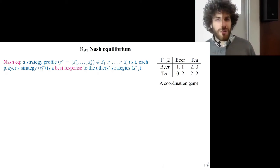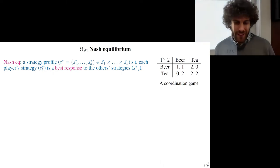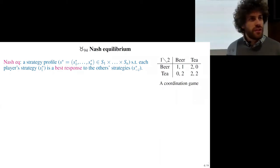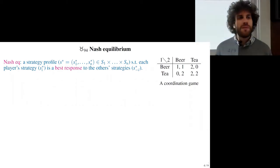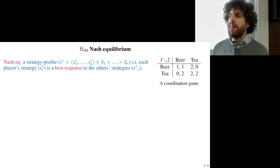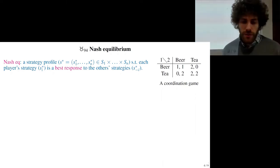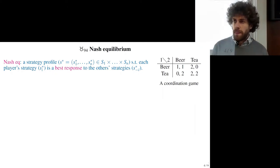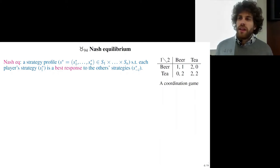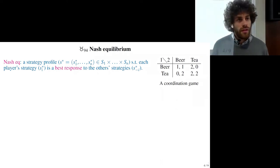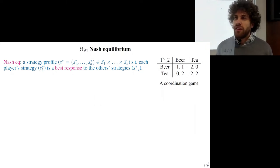Hello everyone! Today we are going to play a little bit. I'm starting by presenting Nash equilibrium, which is a solution concept — probably the most famous solution concept in game theory. A solution concept tells you what rational players will play in a game. The Nash equilibrium tells you that given what the other players play, each player will play their best response — the move that maximizes their expected utility given what the others play.